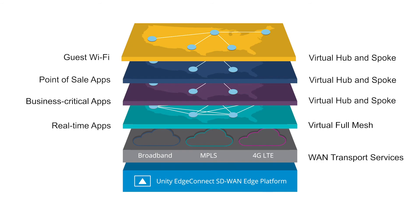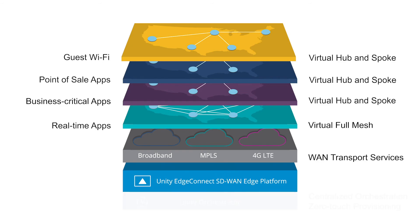Two other key features of an SD-WAN are centralized orchestration and zero-touch provisioning. By centralizing the configuration of an SD-WAN as well as the application, performance, and security policies, enterprises can significantly reduce WAN operational expenses.